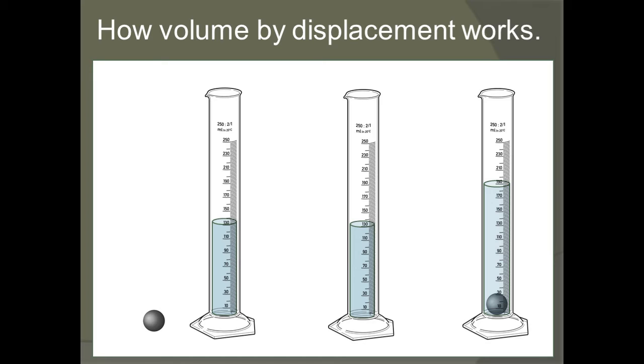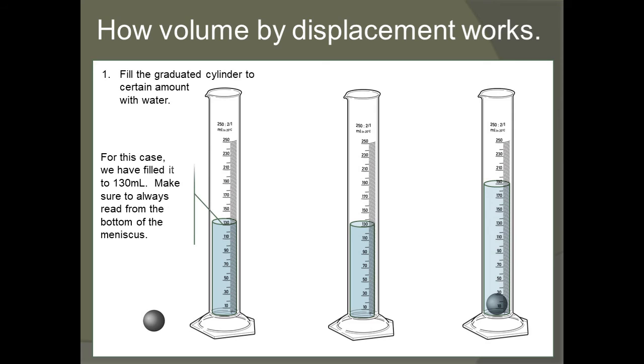How volume by displacement actually works? Well, the first thing we need to do is fill the graduated cylinder to a certain amount with water. For this case, we filled it to 130 milliliters. Make sure to always read from the bottom of your meniscus, right here.